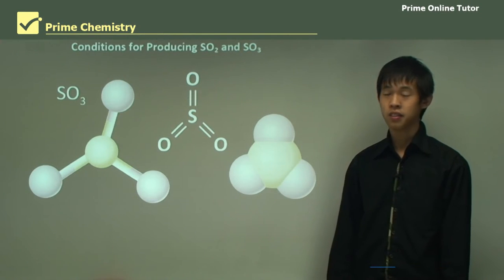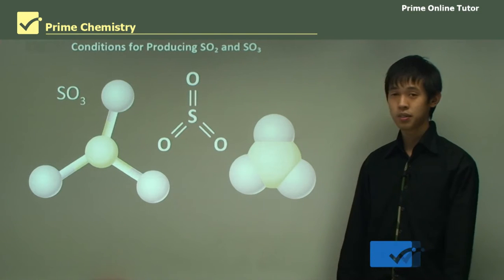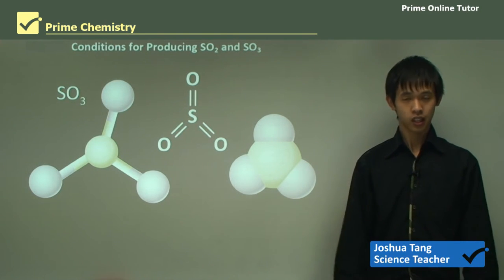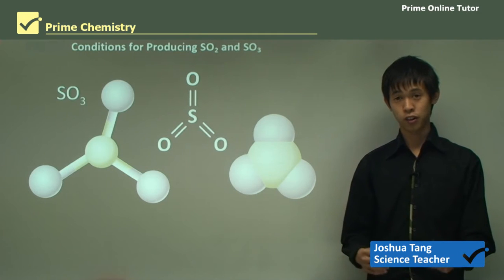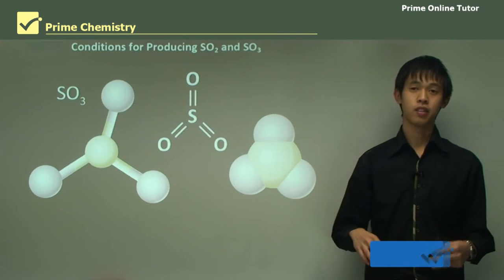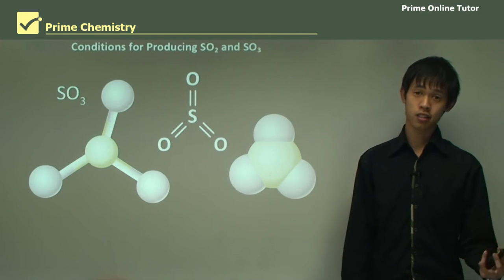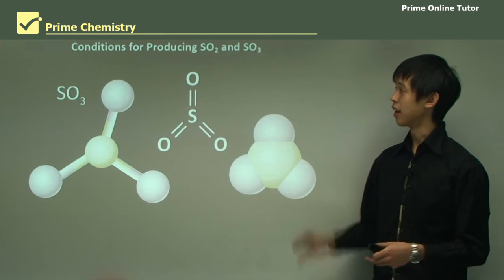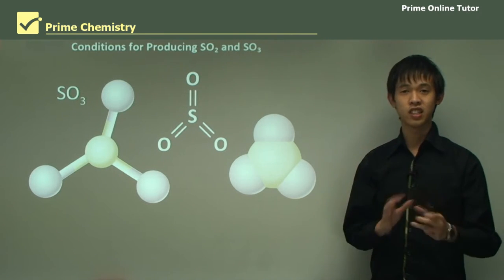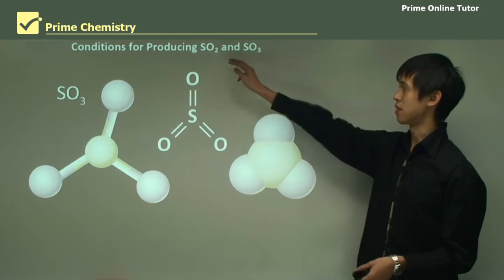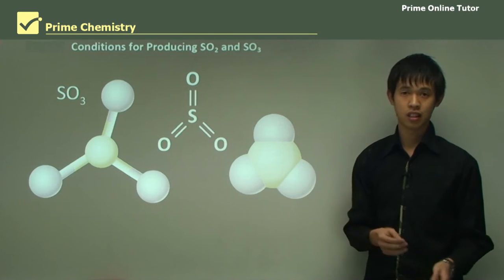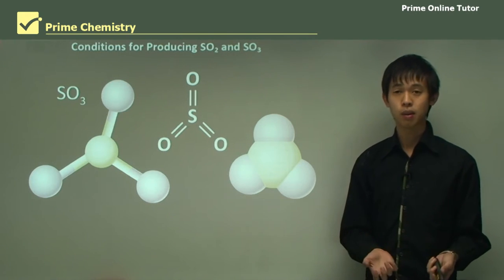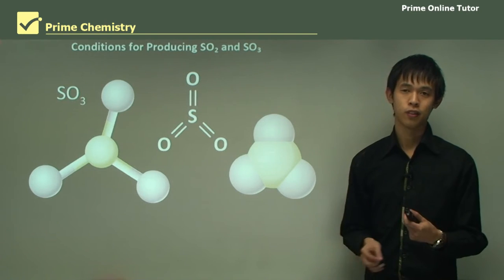Hello everyone and welcome again. Today we'll be talking about the industrial chemistry topic, and in particular we'll be looking at sulfuric acid production. In the last few lessons we've talked about how we get sulfur and how we produce sulfuric acid, and now we're going to talk about the specific conditions for producing SO2 and SO3, which are the two main intermediate products before we get to sulfuric acid.